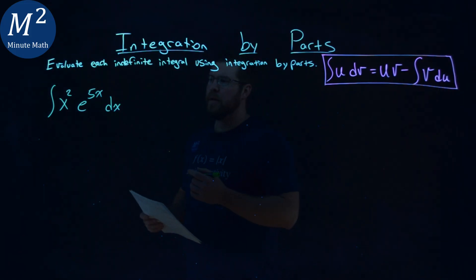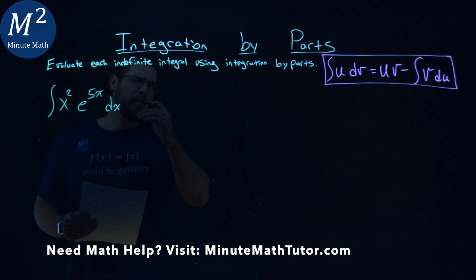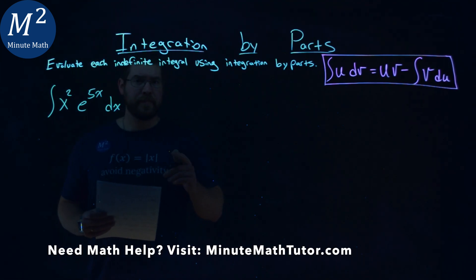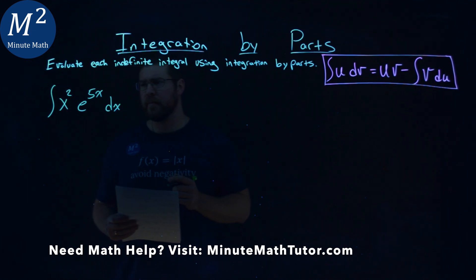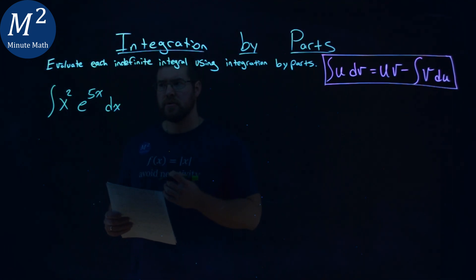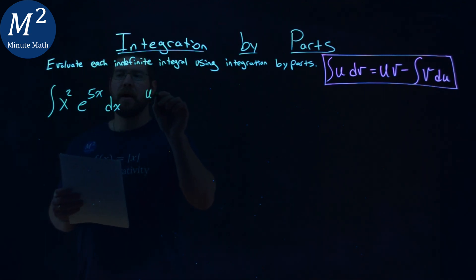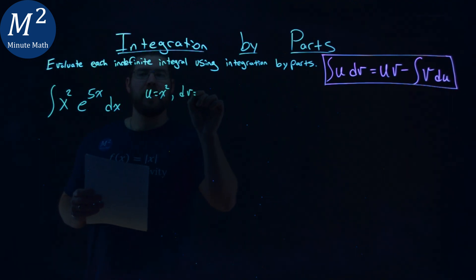We're given this problem: the integral of x squared times e to the 5x dx. We have to evaluate this indefinite integral using integration by parts. We want to find a u value and a dv value to start. I set my u value to be x squared,